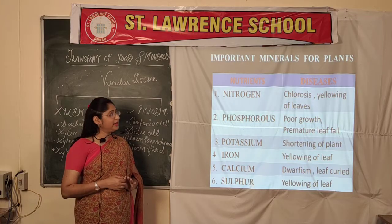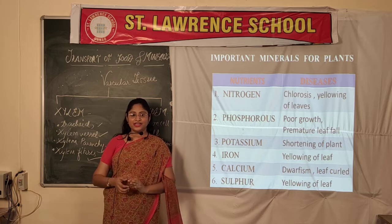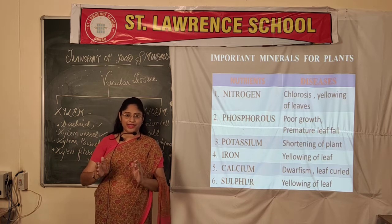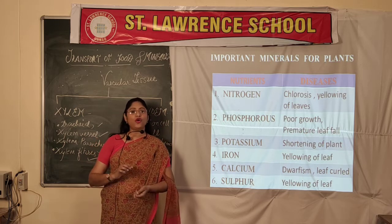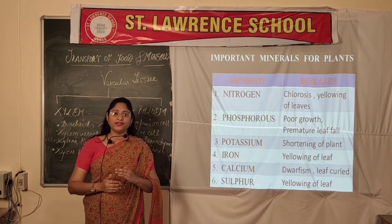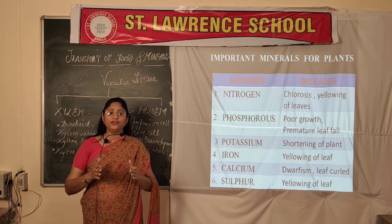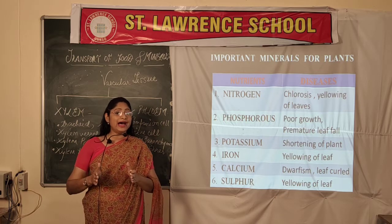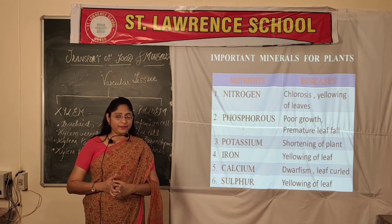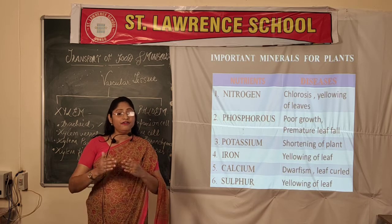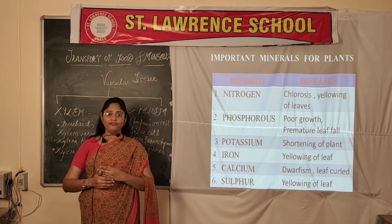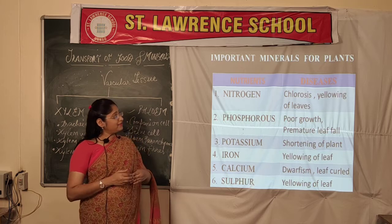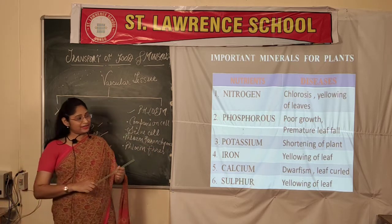Now we head to the nutrients essential for the growth, development, and healthy life cycle of a plant. These nutrient elements can be broadly classified into two categories based on their function: macronutrients, which are required by plants in large quantities, and micronutrients, which are required in very small or meager amounts but are still important because their deficiency will affect the growth and development of the plant.